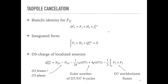Fluxes are not unconstrained: there is a so-called tadpole cancellation condition. Looking at the Bianchi identity of the five-form field strength in Type IIB, there can be sources for the five-form or four-form gauge field coming from F_3 and H_3. Integrating gives ∫F_3 ∧ H_3, which must sum together with all localized sources to zero. Localized sources can be D3-branes, O3-planes, D7-branes, O7-planes, and also worldvolume fluxes on D7-branes. To get generically positive fluxes I need a negative contribution from these localized sources.